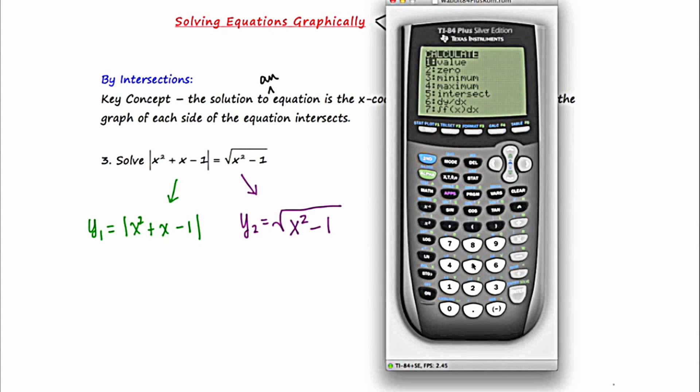Second, trace option five, move the cursor way over to that leftmost intersection, and then press enter three times, one, two, three. Now my first observation is that this answer is not a whole number.